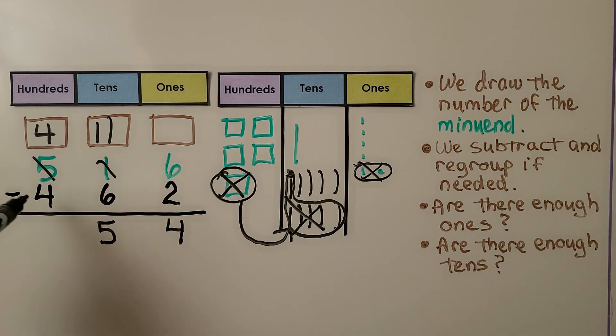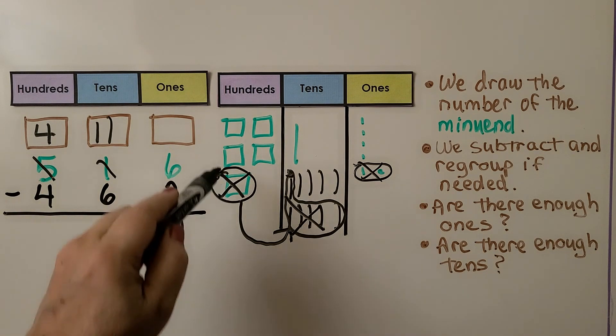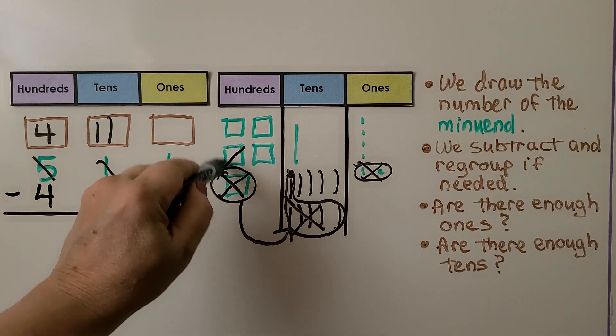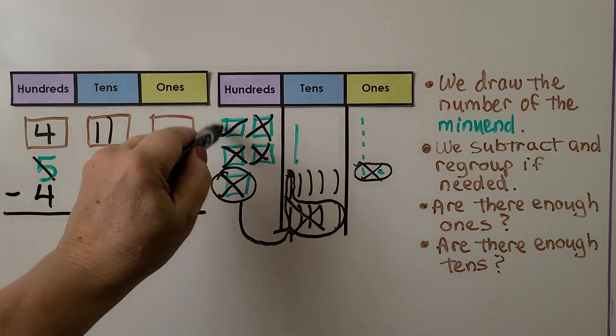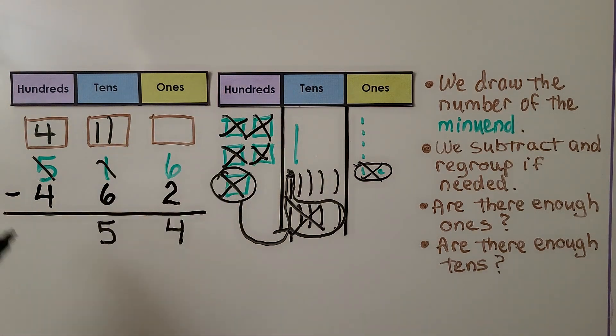Now we need to take four hundreds away. All we have is four hundreds; if we take them away we will have no hundreds. The difference is 54.